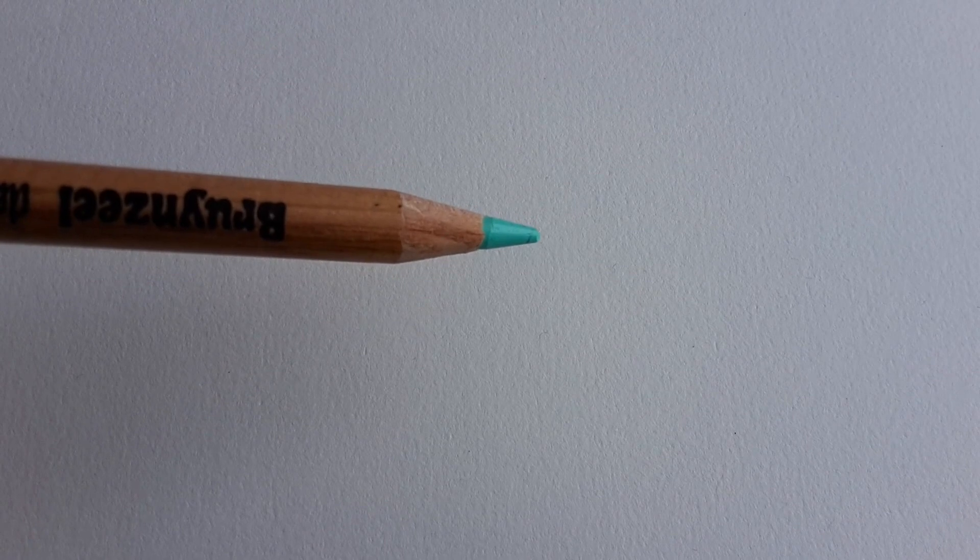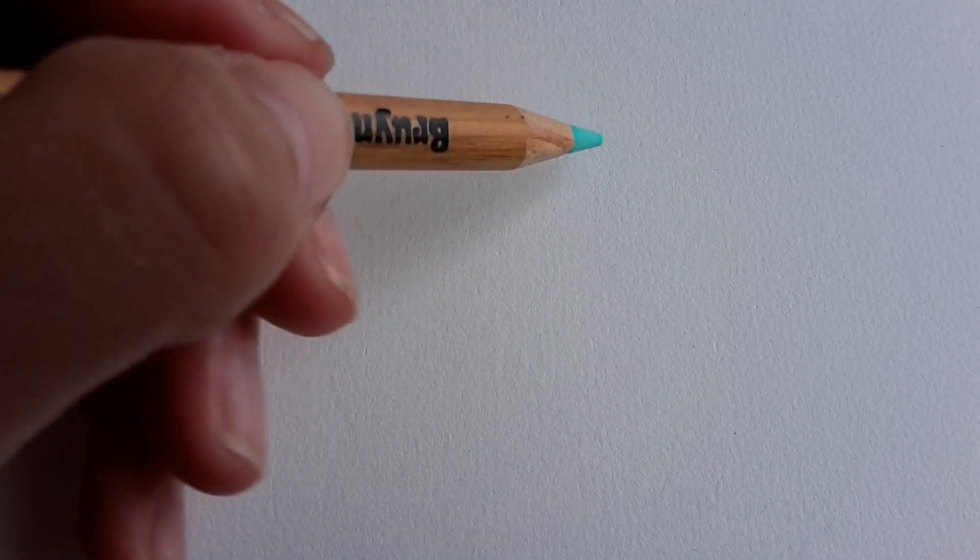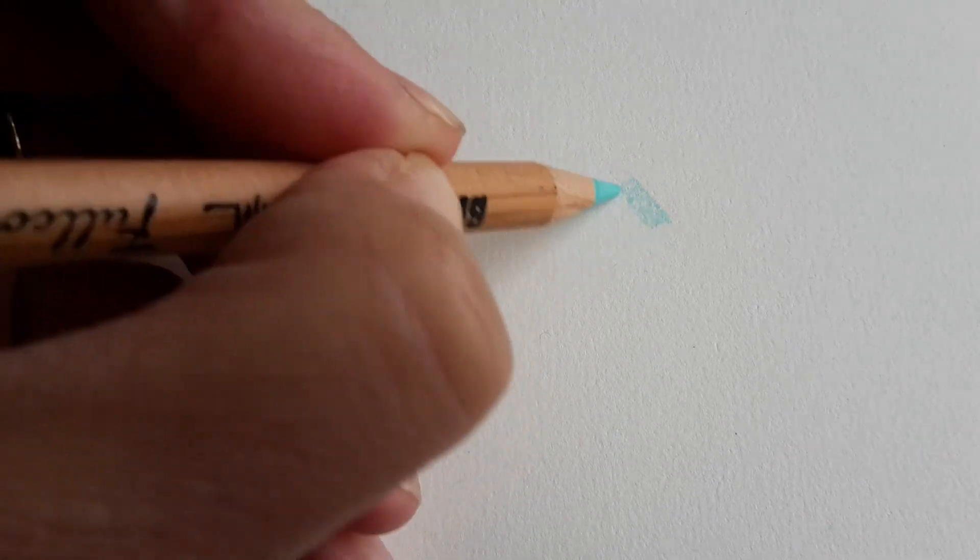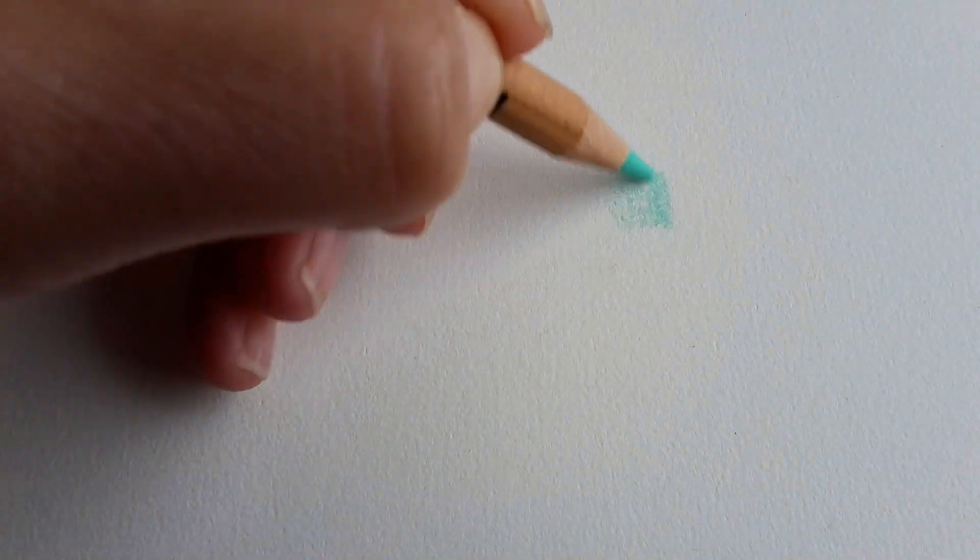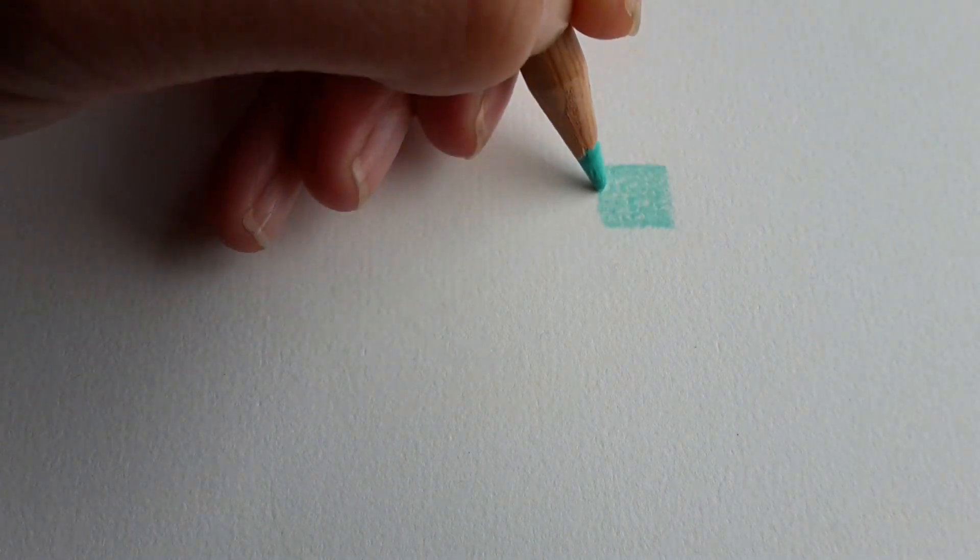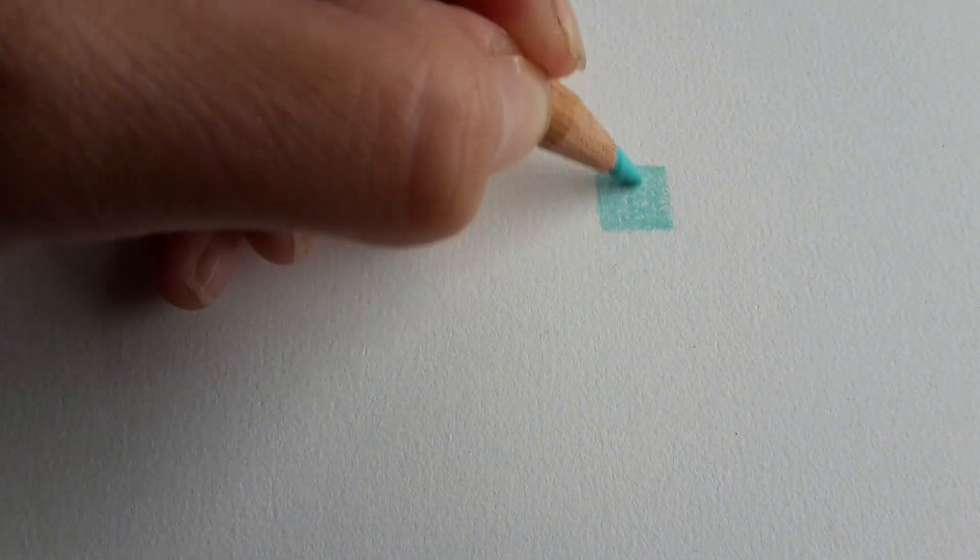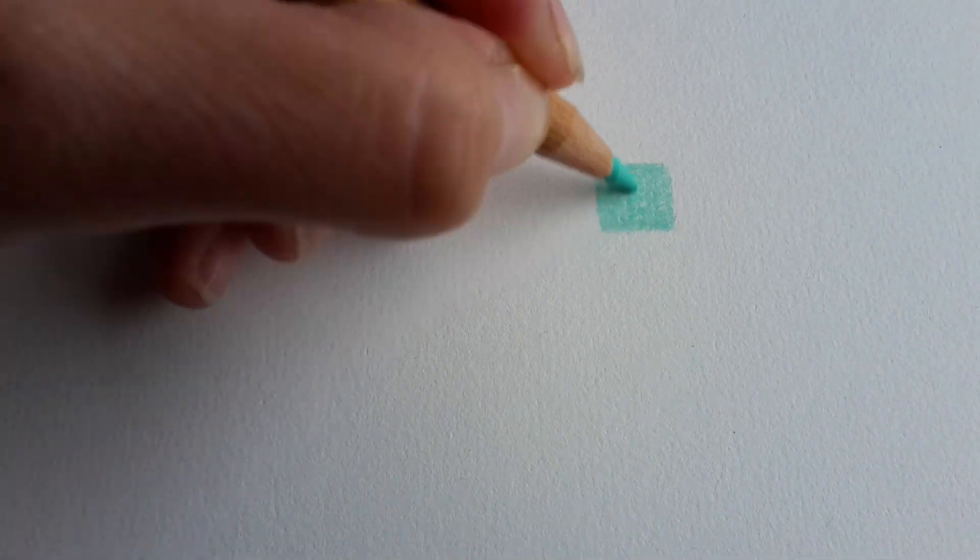Because I do not have all the Polychromos pencils, I cannot tell for sure whether there is a combination that comes extremely close to this ice green. But I will show you some combinations that are not exactly the same, but maybe there is a combination that will help you get the results that you want. So this is ice green. I'll write it down.